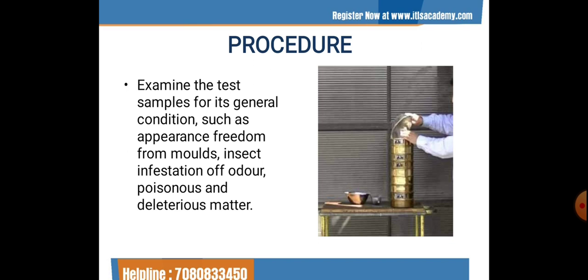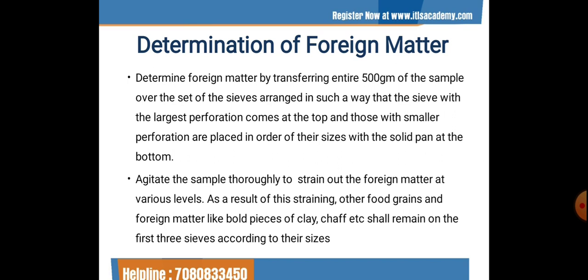For the procedure, first examine the test sample for its general condition, such as appearance, freedom from molds, insect infestations, fodder, or poisonous or deleterious material. Sometimes we reject materials if, by naked eye, we can see any unwanted condition or the cereals are not up to grade. If acceptable, it is carried out for further experimental procedure. To determine foreign matter, transfer the entire 500-gram sample over the set of sieves arranged so that the largest perforation is at the top, with smaller perforations placed in order of size and a solid pan at the bottom.